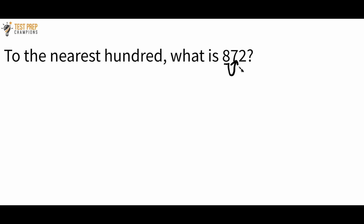Rounding up here means: come back to the 8, bump it up 1 to make it a 9, and replace the 7 and the 2 with 0s. So the correct answer is 900.